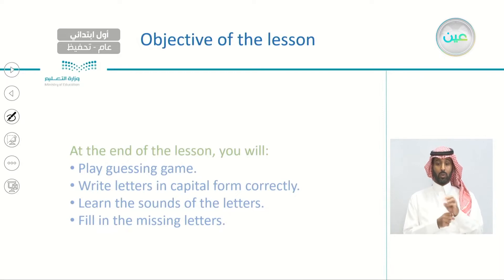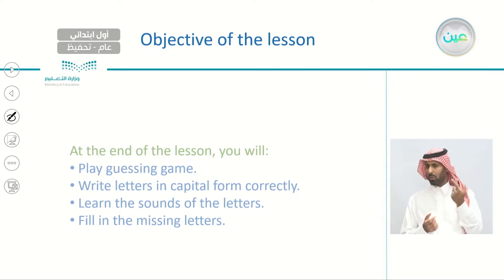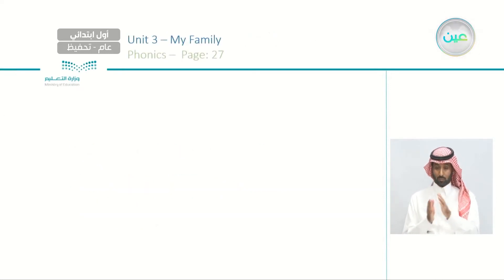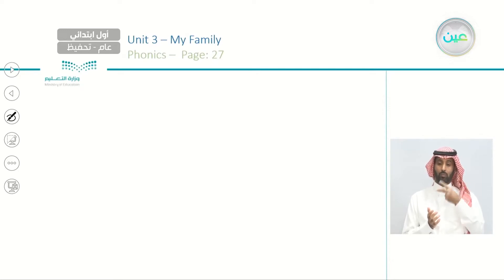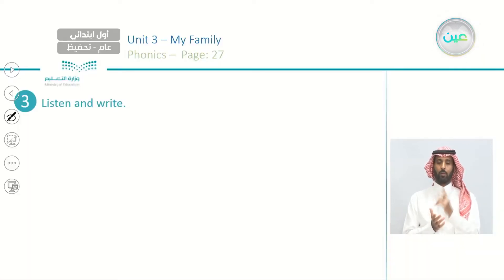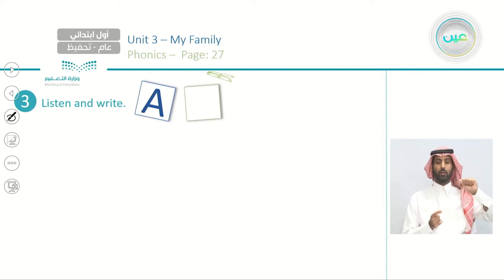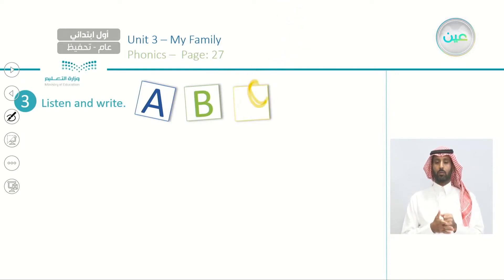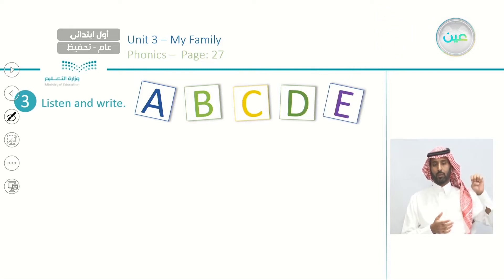What you will learn today? You will learn playing a guessing game, write letters in capital form correctly, learn the sounds of the letters, and fill in the missing letters. Now open your books on page 27. Page 27 — two and seven together, 27. Now we have number 3, listen and write. Use your pen or pencil to write. So now we have A, B, C, D, E.